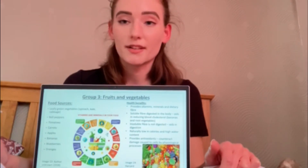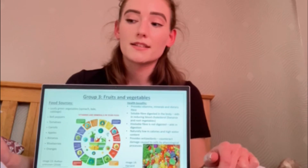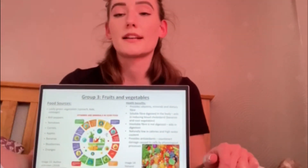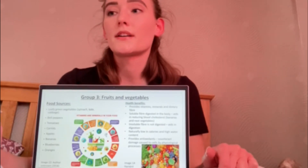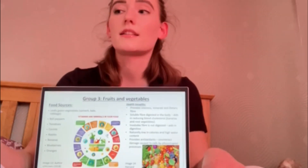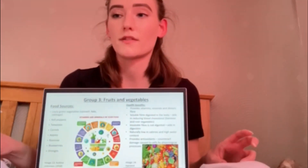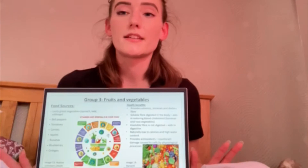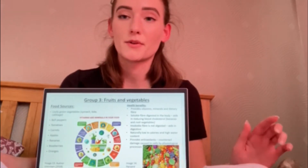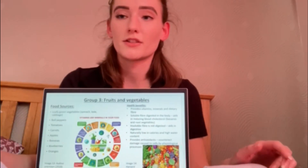Soluble fibre is partly digested and believed to aid in the reduction of cholesterol in the blood as it binds with fats in the digestive system; examples include oats, barley, broccoli and apples. Insoluble fibre is not digested; instead it aids in digestion and elimination of waste products for the gut, facilitates the growth of important bacteria in the gut, and can help with the prevention of constipation and development of colon cancer. Examples include wheat bran, whole grains, fruits and vegetables.